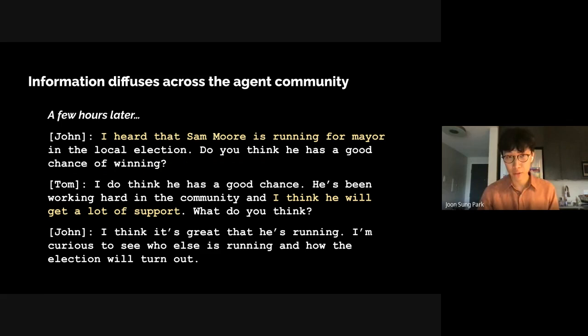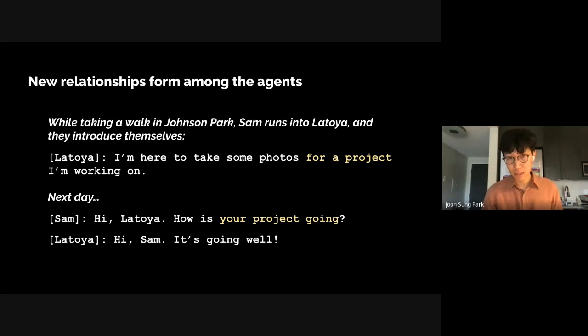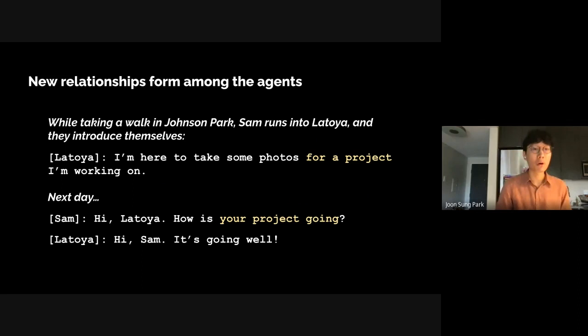Second, new relationships form among agents in Smallville. Latoya and Sam do not know each other at the start of the simulation. But while taking a walk in Johnson Park, Sam runs into Latoya and they introduce themselves. Latoya tells him she is at the park to take photos for a project she's working on. The next day, when Sam sees Latoya again, they remember each other, and this time Sam asks Latoya 'How's your project going?'